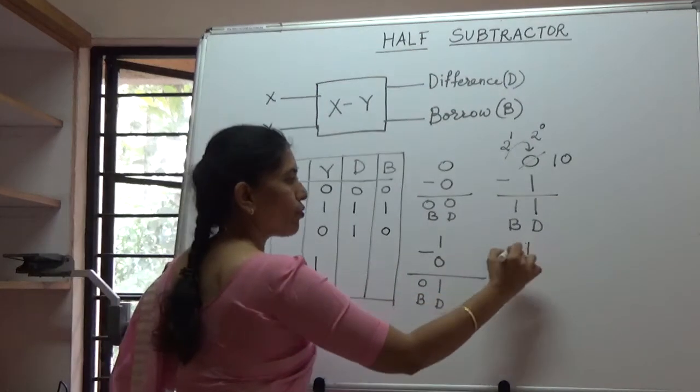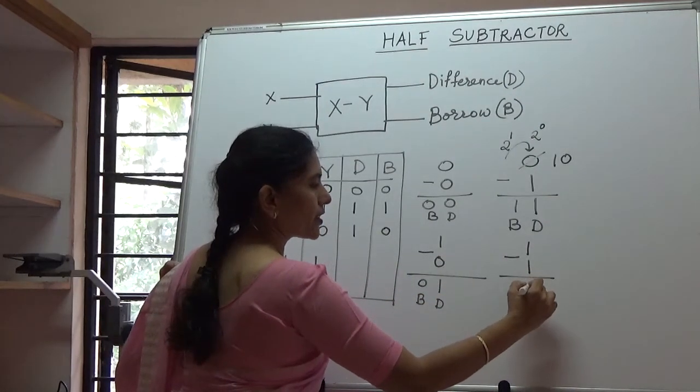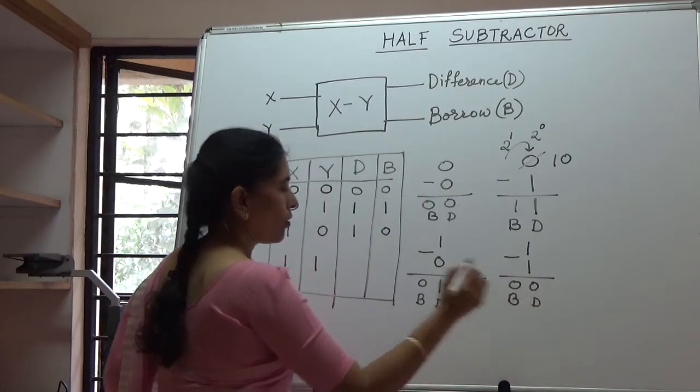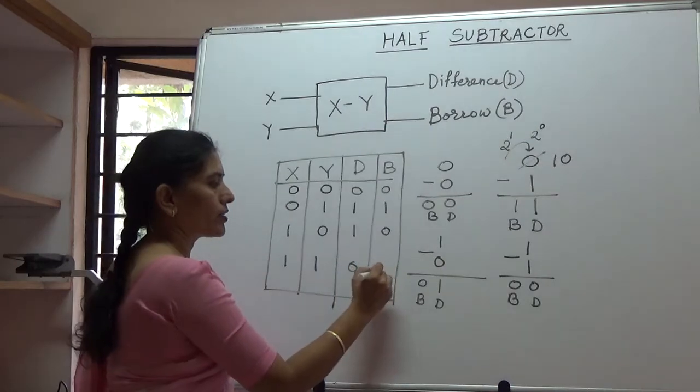If 1 minus 1 is performed, the difference is 0 and no borrow is required. So both the bits are 0.